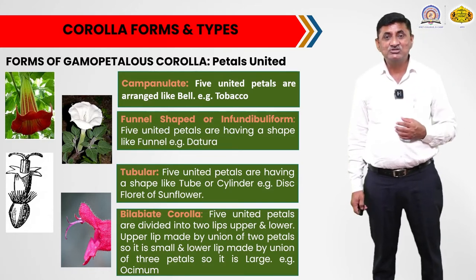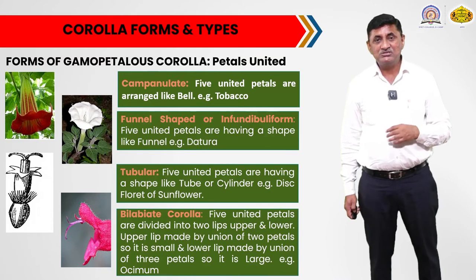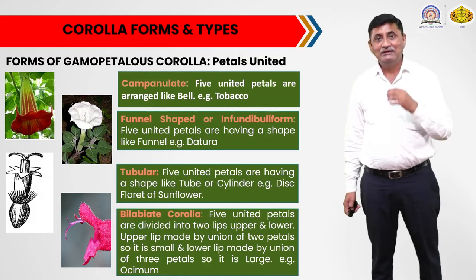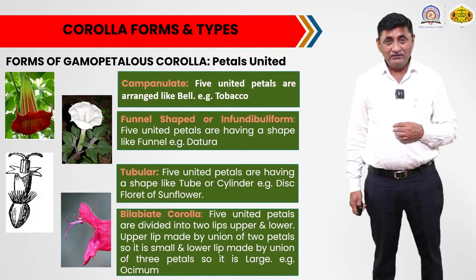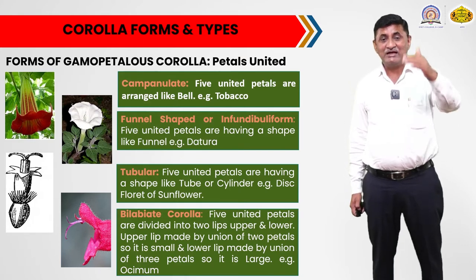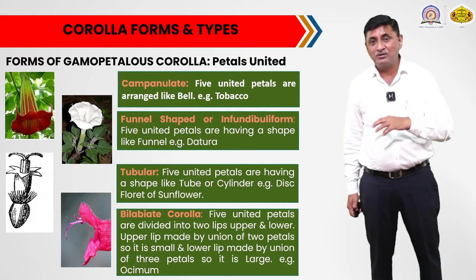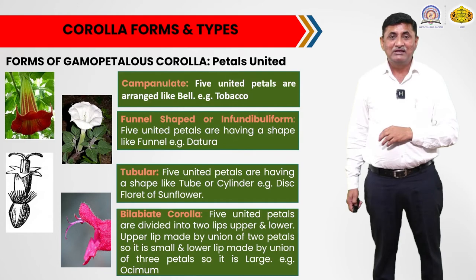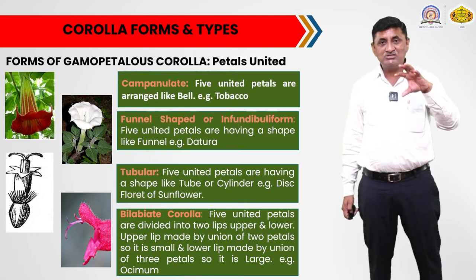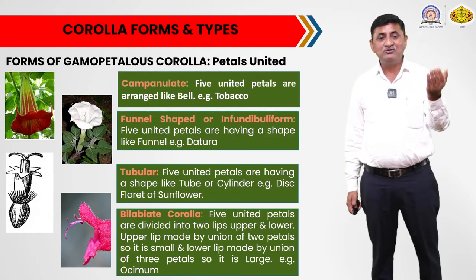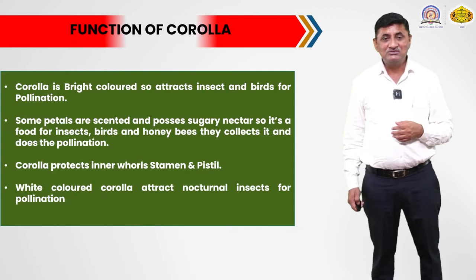Bilabiate corolla very commonly occurs in flowers of family Lamiaceae. The plants like Ocimum and Salvia show the bilabiate kind of corolla. So these are the different forms of gamopetalous corolla. In summary, for polypetalous corolla we saw cruciform corolla and papilionaceous corolla. For gamopetalous corolla, there is campanulate corolla, funnel-shaped corolla, tubular corolla, and bilabiate corolla.